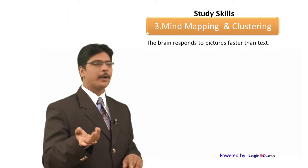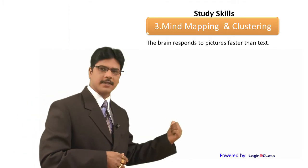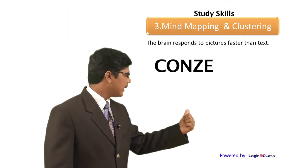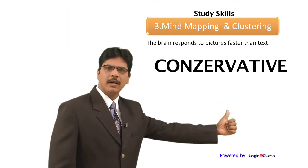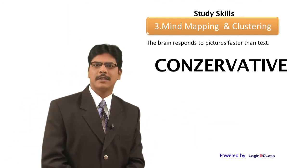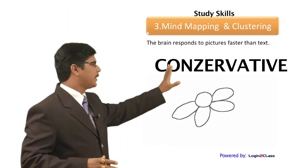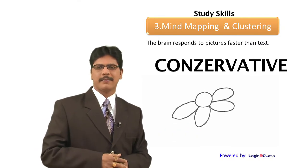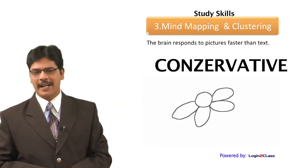Now tell me what I am drawing. Look at the spelling: C-O-N-Z-E-R-V-A-T-I-V-E. You did not tell me what it was until I finished writing the last letter. Why? With the pictures, you responded at just five to ten percent, but with this spelling, until I did not write the last letter, you could not tell me what it was. Yes, because pictures are the brain language and text is not the brain language.